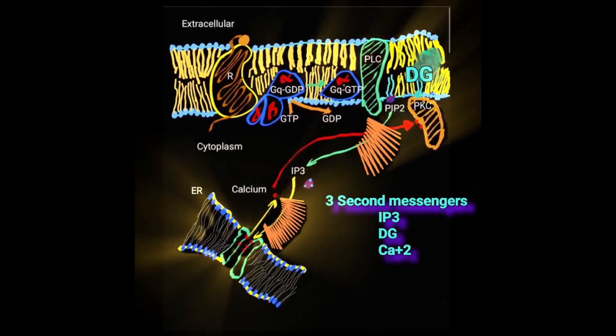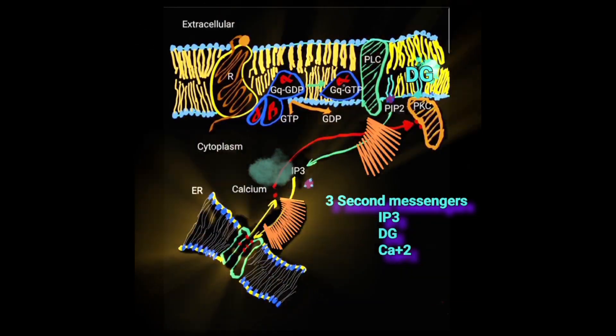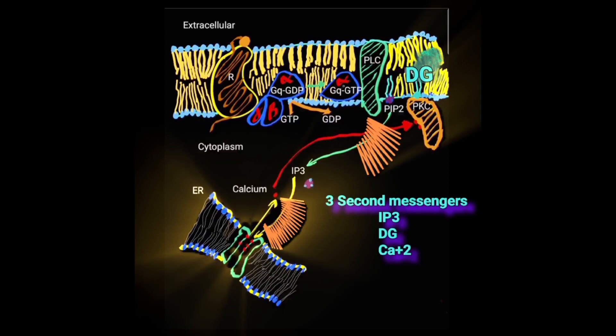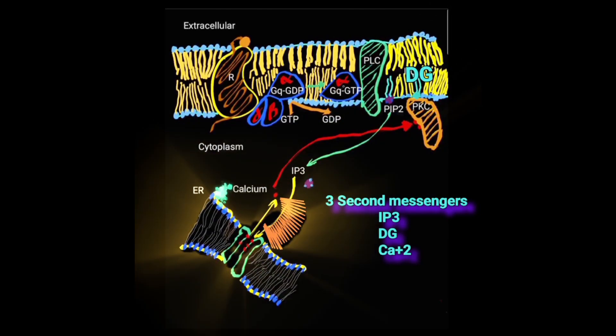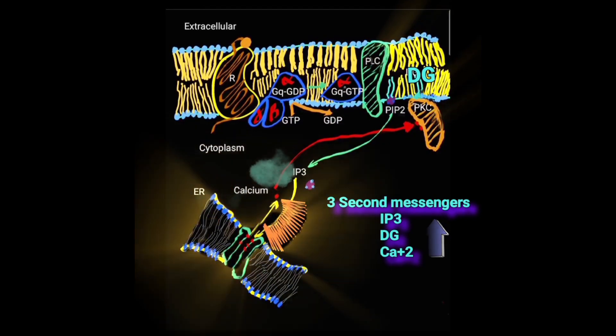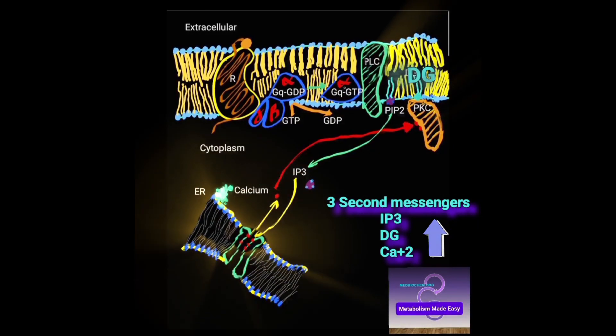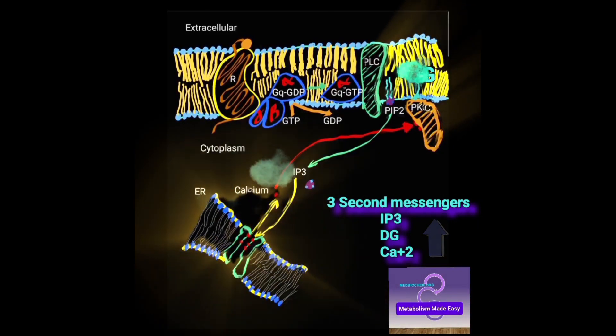IP3 moves to the ER and releases calcium from calcium stores in the ER. Ultimately, three second messengers are produced in response to receptor activation by epinephrine.